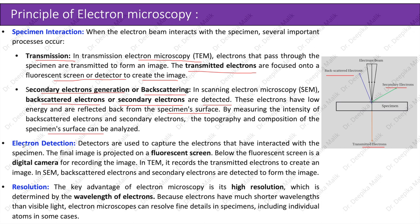Electron detection: detectors are used to capture the electrons that have interacted with the specimen. The final image is projected on a fluorescent screen. Below the fluorescent screen is a digital camera for recording the image. In transmission electron microscopy it records the transmitted electrons to create an image; in scanning electron microscopy, backscattered or secondary electrons are detected to form the image.